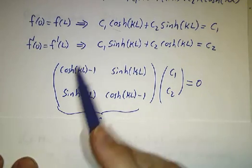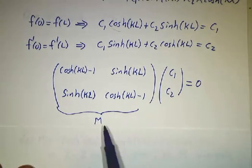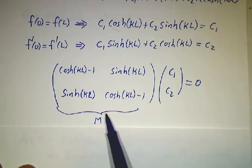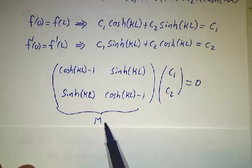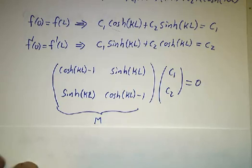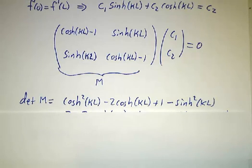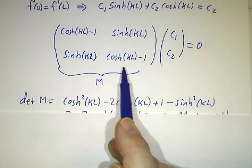Now when can you find a non-trivial solution to a matrix M times a vector equals 0? You can find a non-trivial solution if and only if the determinant of M is 0. So let's compute the determinant.